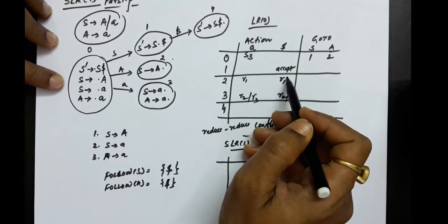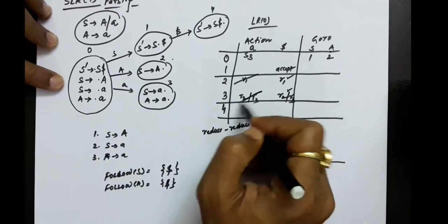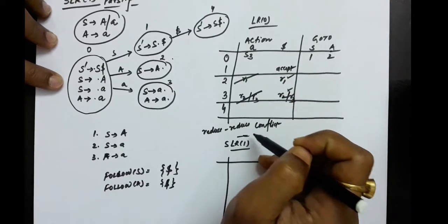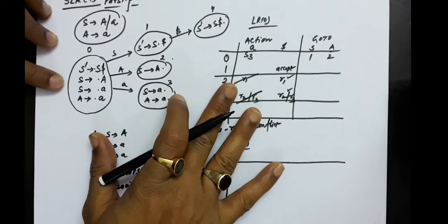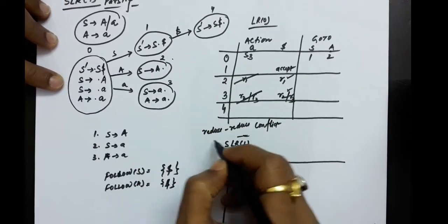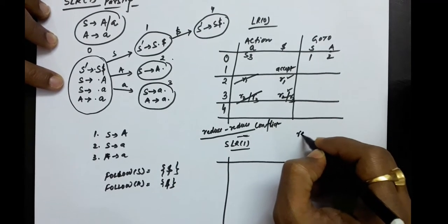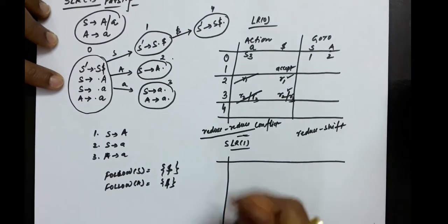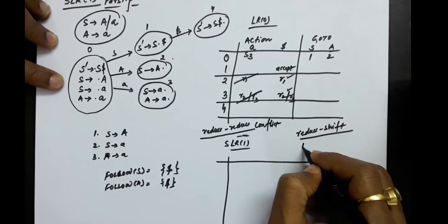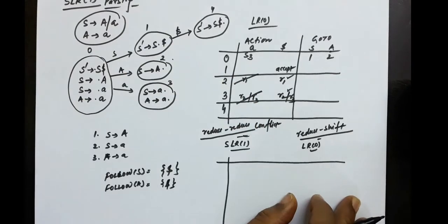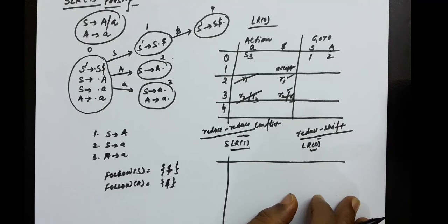We write the reductions only at the FOLLOW positions. So R1 and R2 are written only at dollar positions, but even with the SLR1 parsing table we still have reduce-reduce conflicts — it does not resolve the issue. If when making an LR0 parsing table we find any conflict — reduce-reduce or shift-reduce — the grammar is not LR0. Similarly, if in the SLR1 parsing table we have shift-reduce or reduce-reduce conflicts, the grammar is not SLR1.